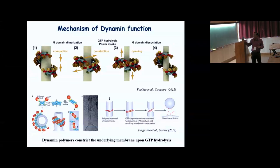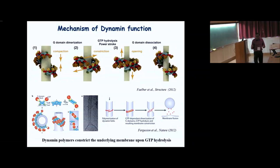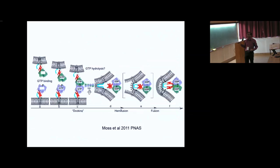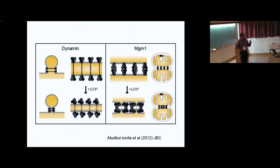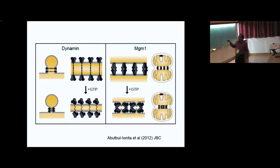Dynamin family proteins associate with target membranes, change the curvature, and can lead to either fission or fusion. In mitochondria there are two different kinds of dynamin which do membrane fusion — one for the outer membrane and one for the inner membrane. They associate with and tether between two different mitochondria, induce curvature change in the membrane, and this leads to fusing the two membranes into one mitochondrion. Subsequently, another dynamin group handles inner membrane fusion.